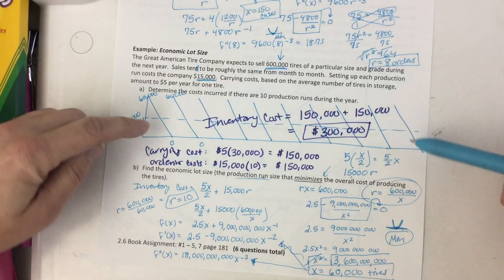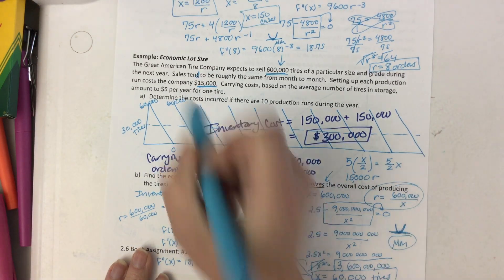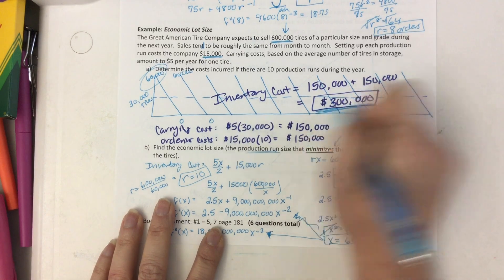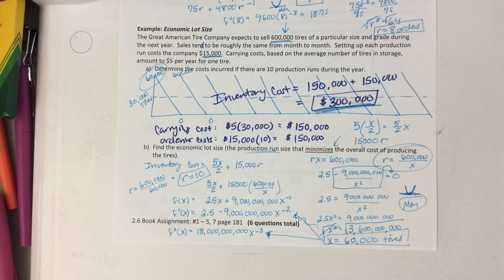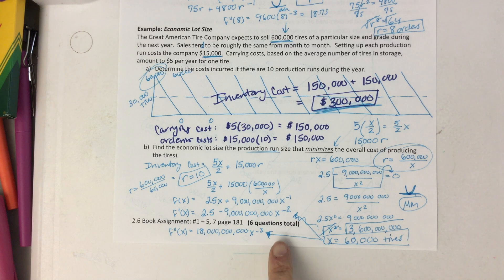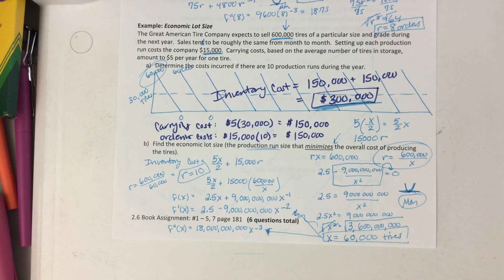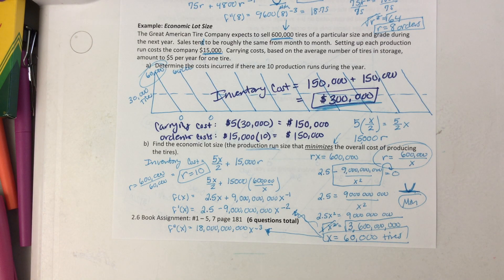The scenario they gave us right at the start — 10 orders of 60,000 tires each — is actually the cheapest the Great American Tire Company could pay for their inventory costs on that tire for the year. There are six practice questions in the book I want you to try. I hope you enjoyed this. I like taking math we learn in the classroom and showing what it looks like in the real world. These skills are pretty important, and I hope you had a great time. I'll talk to you guys soon.